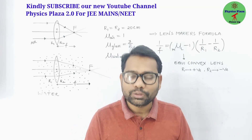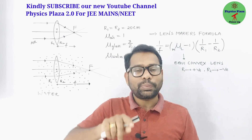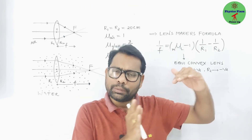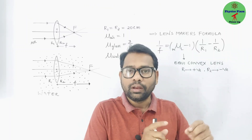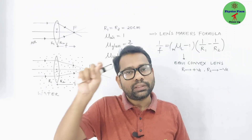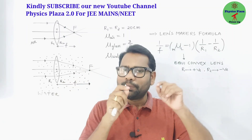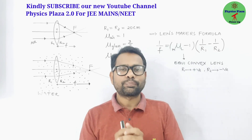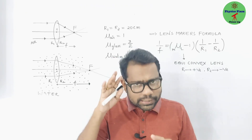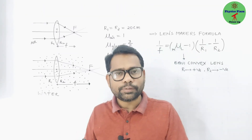Children, what will happen to the focal length of a lens if it is placed in water? Before, it might be in air — now what happens to its focal length when it is placed in water? It might be a convex lens or a concave lens. To understand this, let us consider a convex lens.